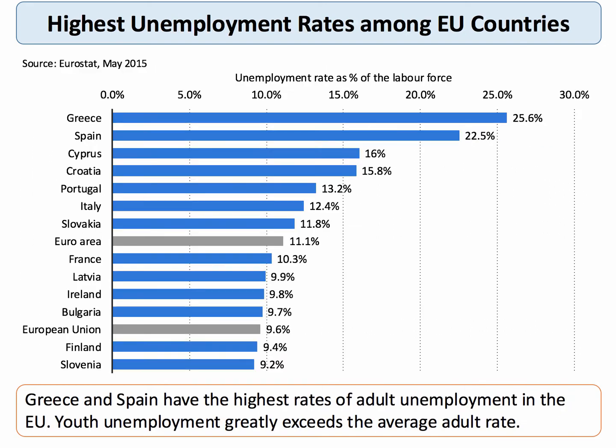UK unemployment can be seen in the context of unemployment rates in other countries. This chart shows unemployment in the European Union, a selection of countries. Greece and Spain are the outliers, with horrendously high rates of unemployment in excess of 20–22%. The European Union as a whole has an unemployment rate of about 10%; the Euro area in the single currency is slightly higher at 11%. So the UK actually looks relatively good using this data.